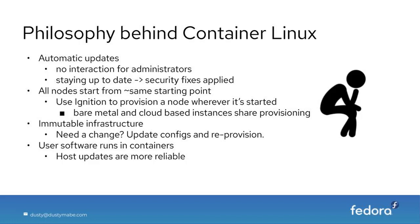Container Linux had all nodes start from approximately the same starting point, and they used Ignition to achieve this goal. You use Ignition to provision a node wherever it starts, whether on bare metal or cloud, and they all essentially start from the same point. Container Linux also focused on immutable infrastructure — if you need a change, you're encouraged to update your configuration and reprovision. User software runs in containers, which means applications don't depend on the host, and host updates are more reliable.